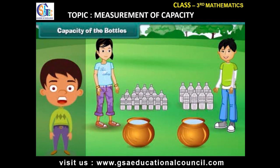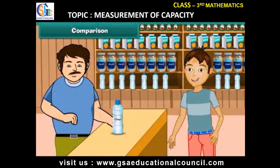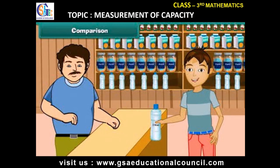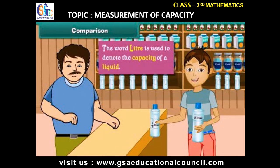Comparison: Rama was out on a picnic and felt thirsty. He went to a shop and purchased one small bottle of water. This bottle can hold one liter of water. There were other bottles of different capacities — one held half a liter and another held two liters of water. The word liter is used to denote the capacity of a liquid.